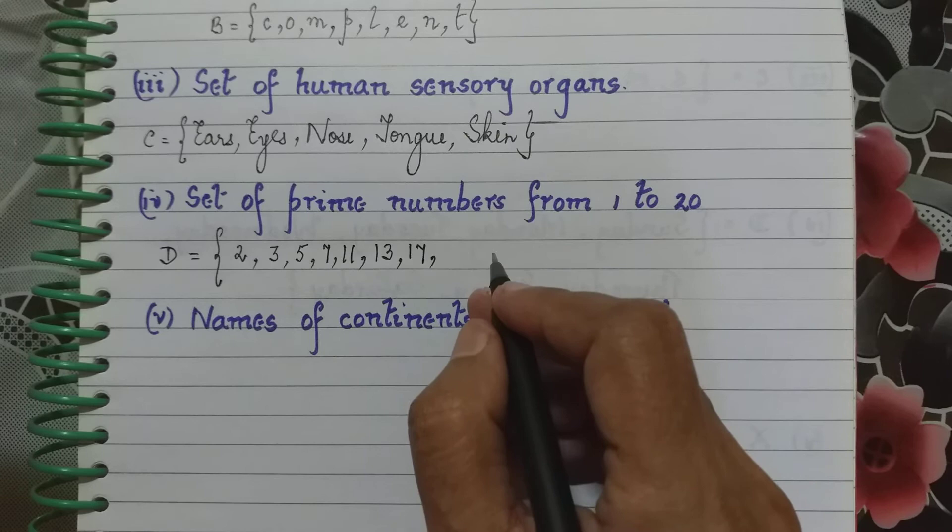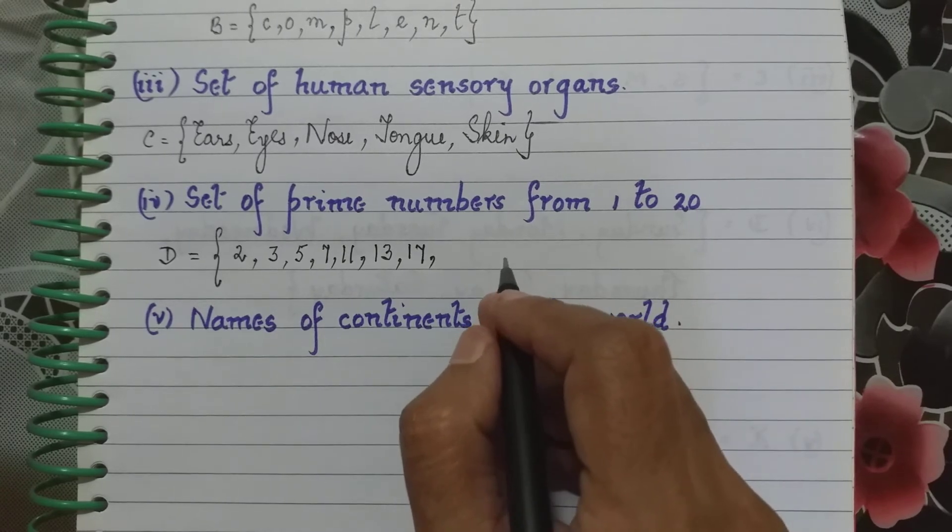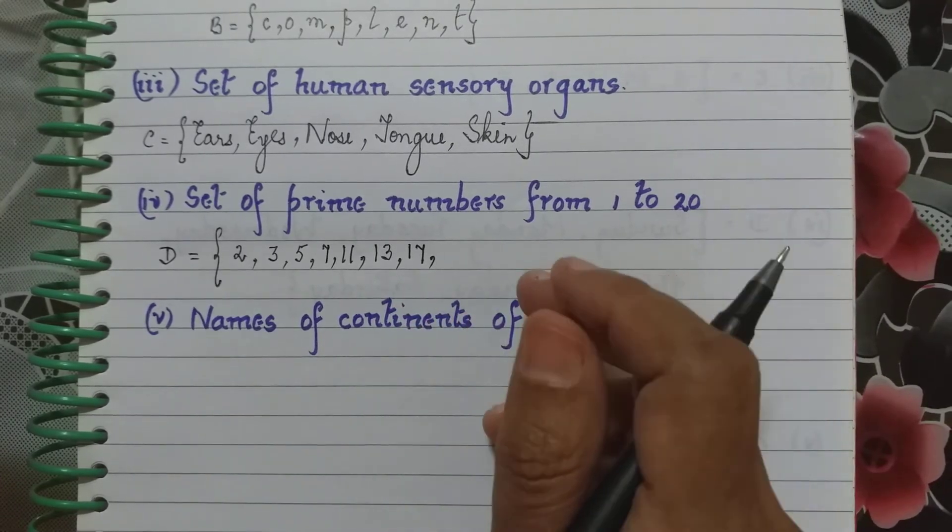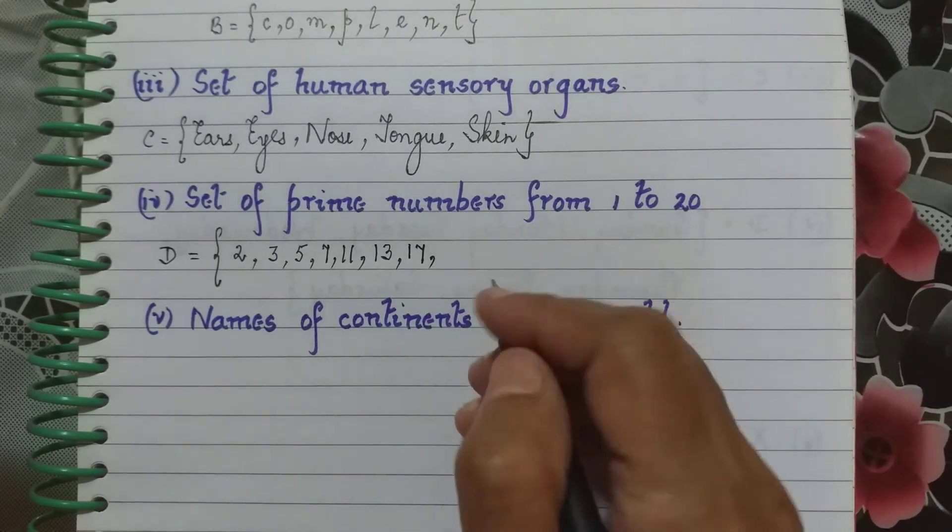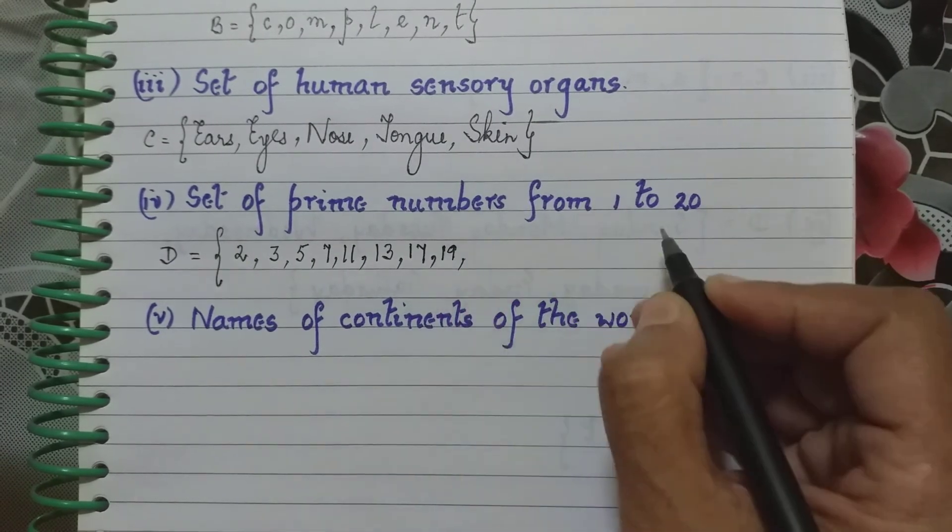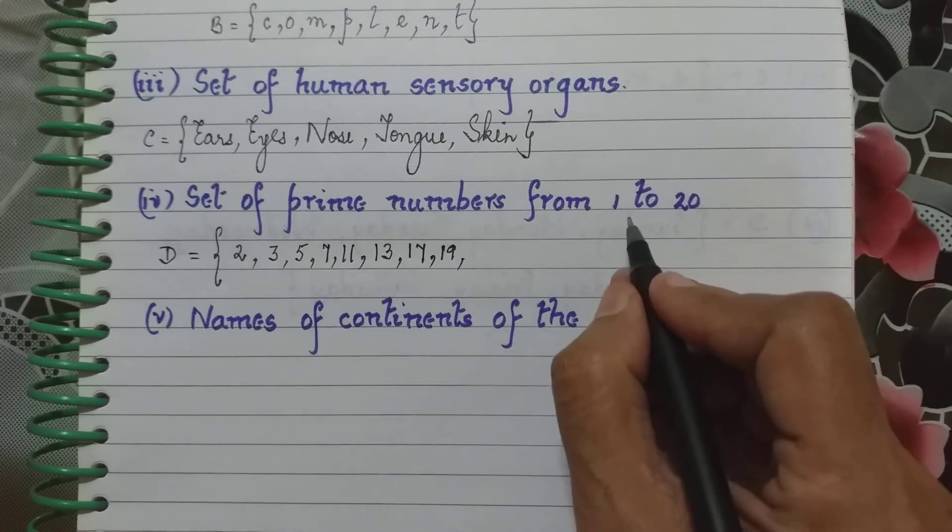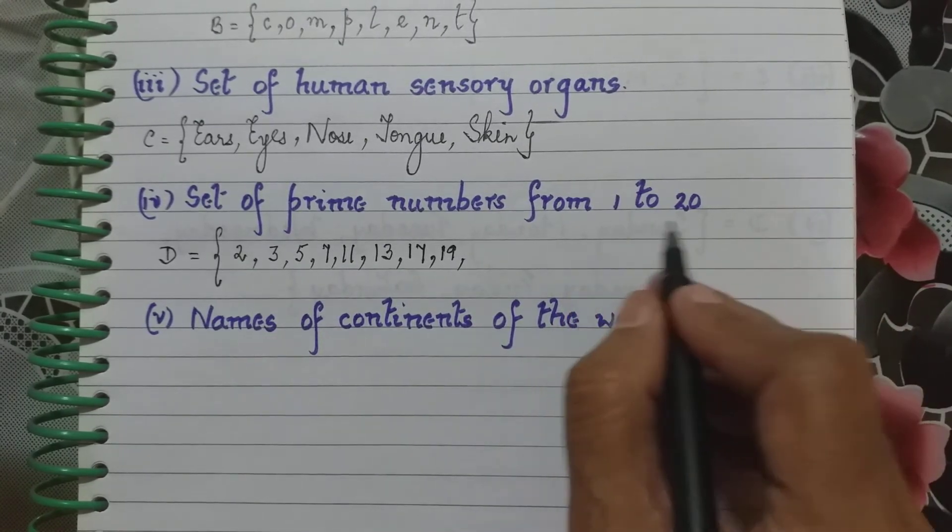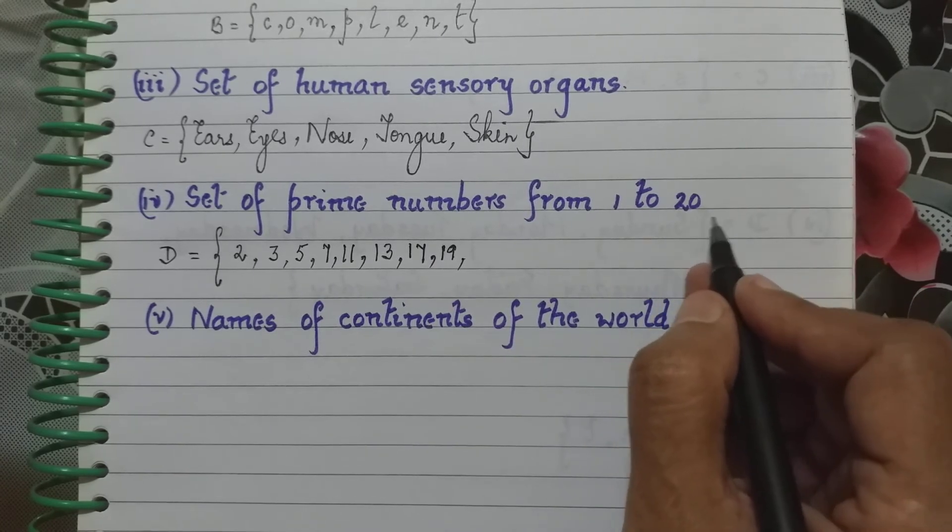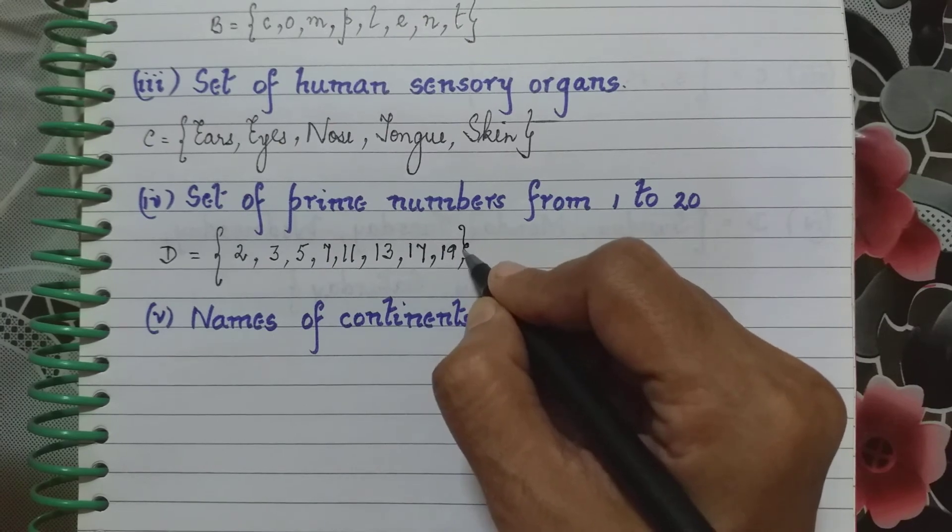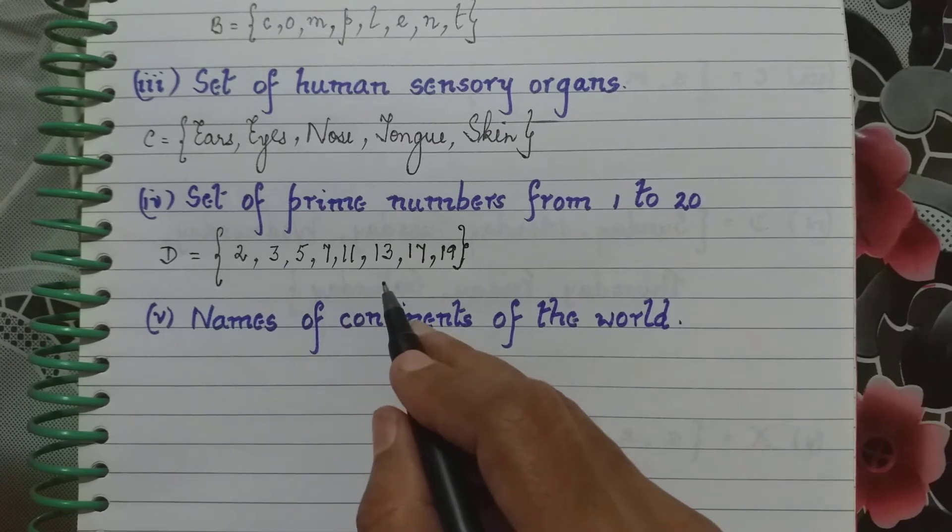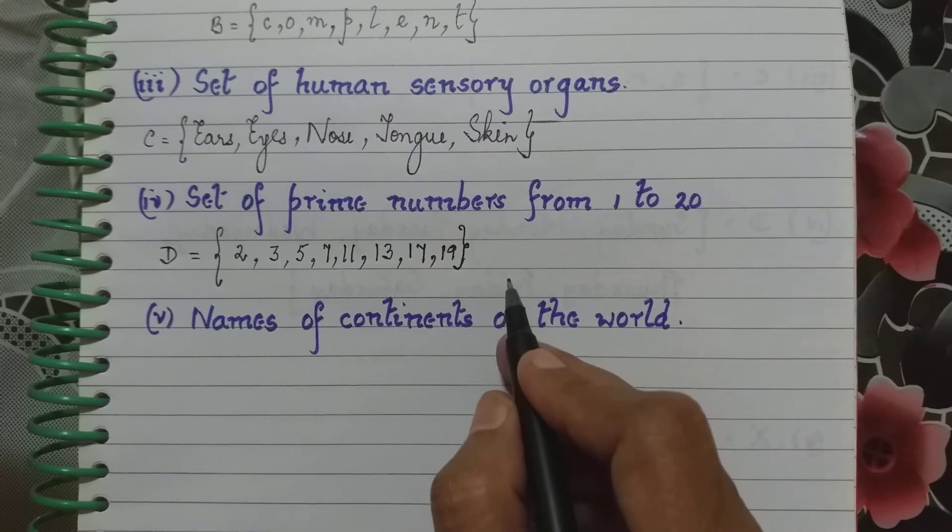18, we have 2 and 9 as the factors of 18. 2, 3, 6 and 9 are the factors of 18, so we don't include that. Lastly is 19. We can use 20 also here because they said from 1 to 20, not between 1 to 20. We can use 20 here also, but 20 is not a prime number. So our last element will be 19 itself. So we have 2, 3, 5, 7, 11, 13, 17 and 19.